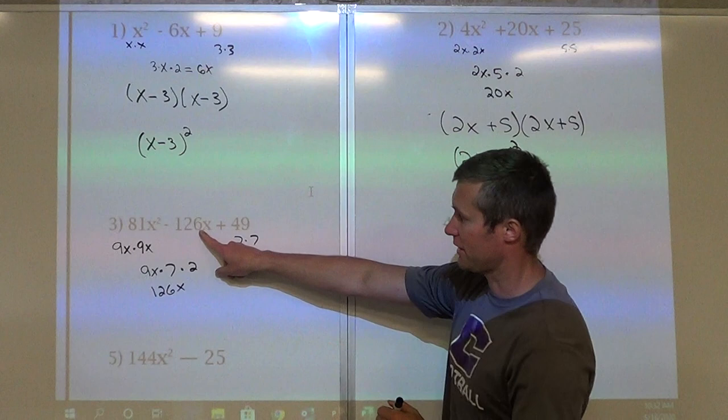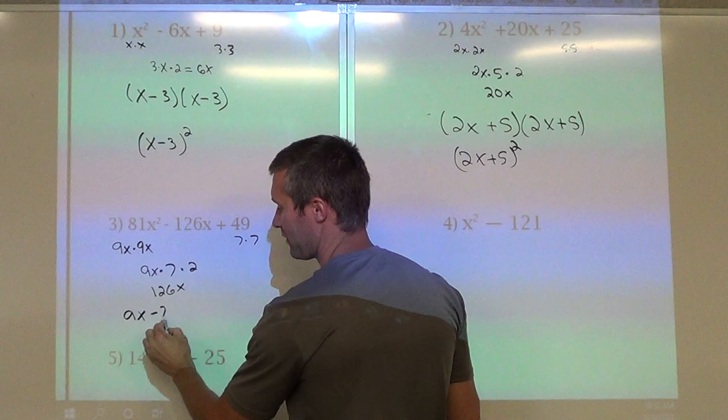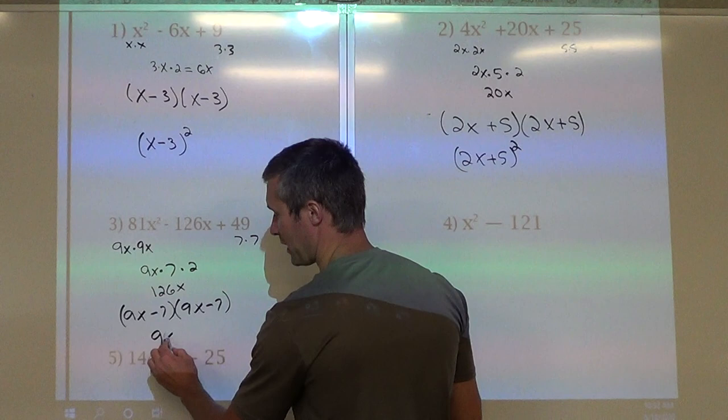Since that one is subtraction, then it's going to be 9x minus 7 times 9x minus 7, or 9x minus 7 squared.